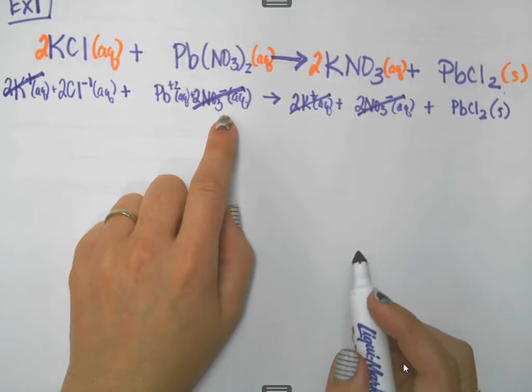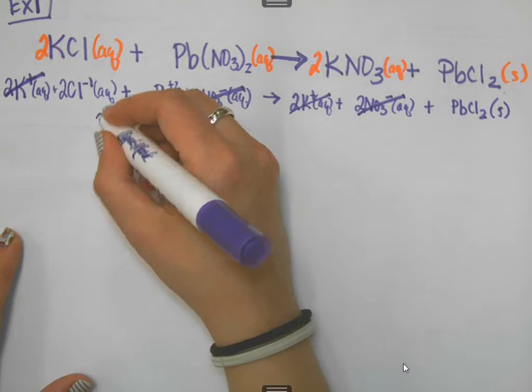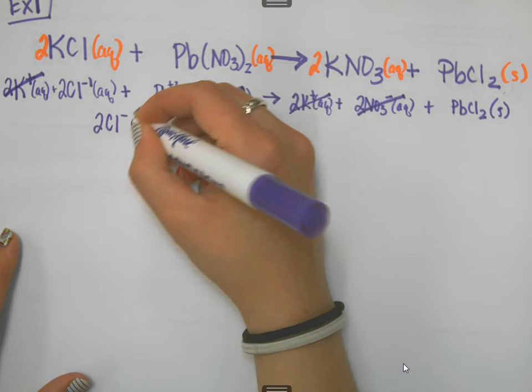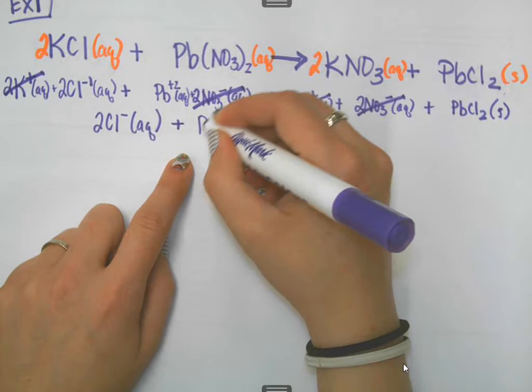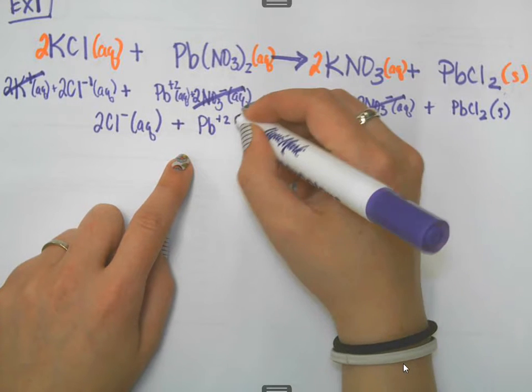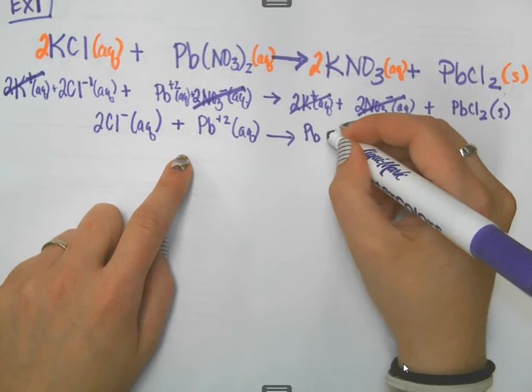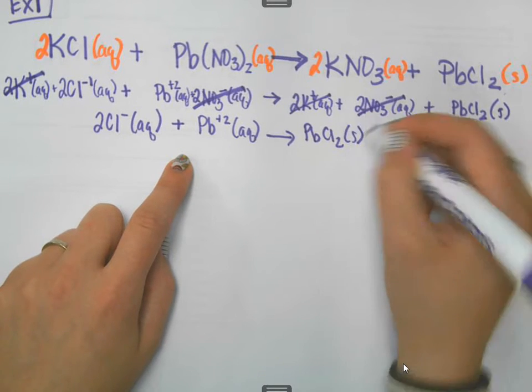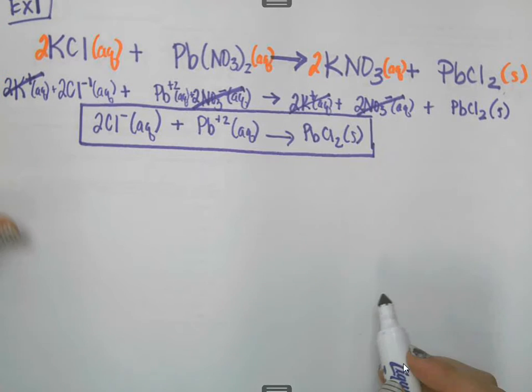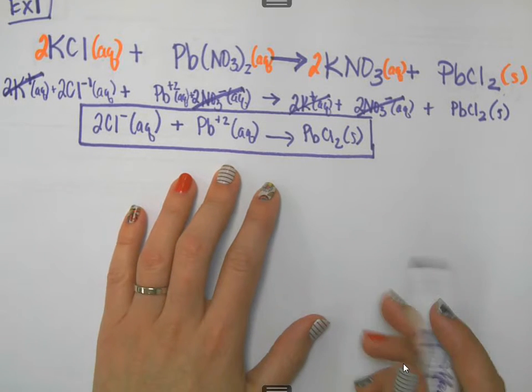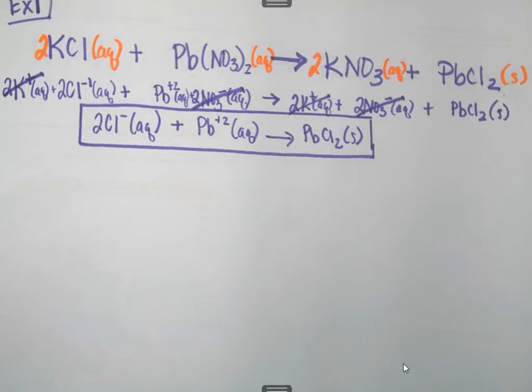Now, my final step, then, is to go back and write all of this back down and clean it up. And I'm just going to write down the things that do not cancel. So, I write down the two chloride ions. I'm going to write down my lead two ion. And I write down the lead two chloride. This right here is my net ionic equation. These are the things that basically came out of the reaction that do not cancel out.